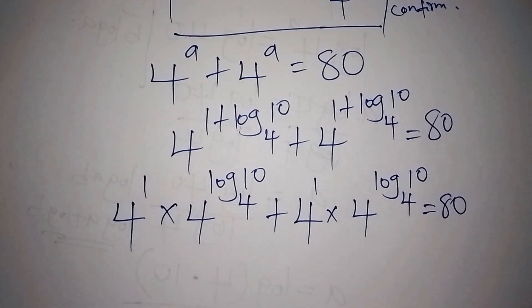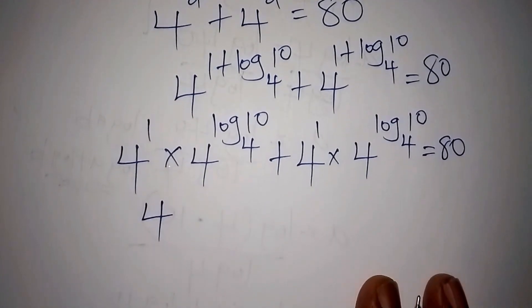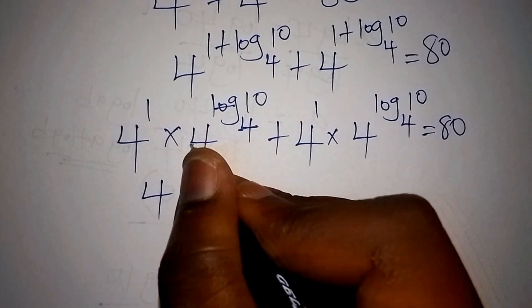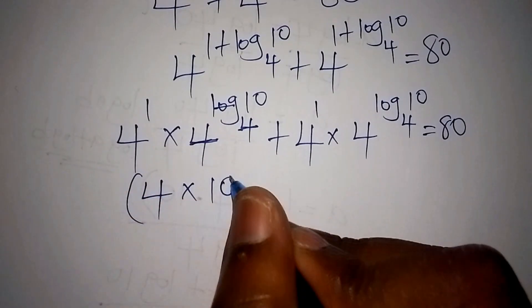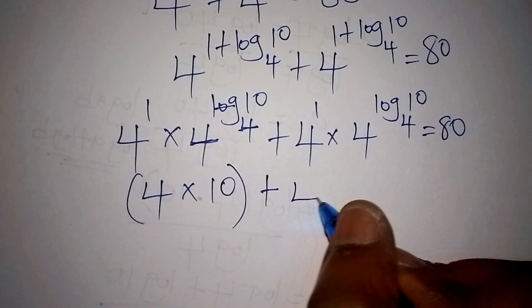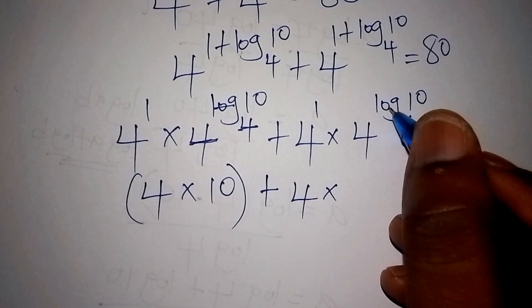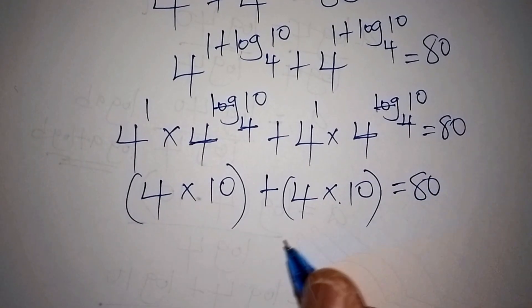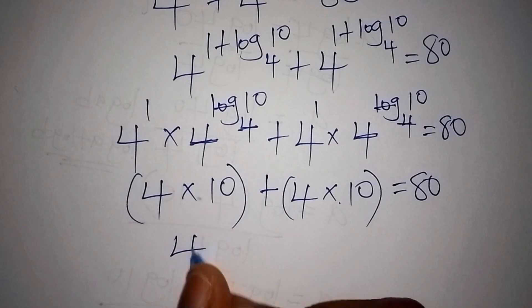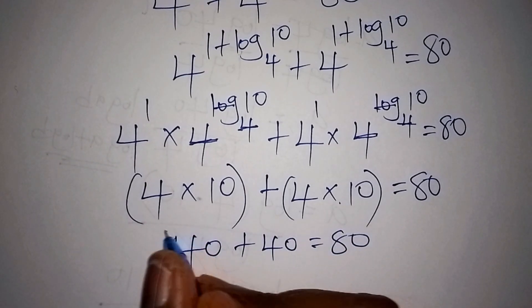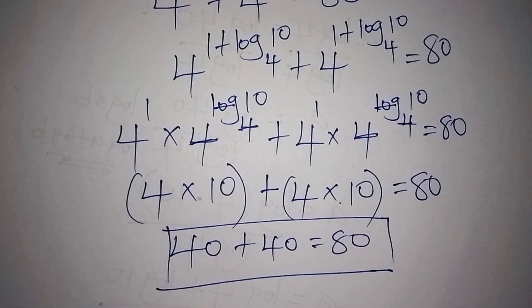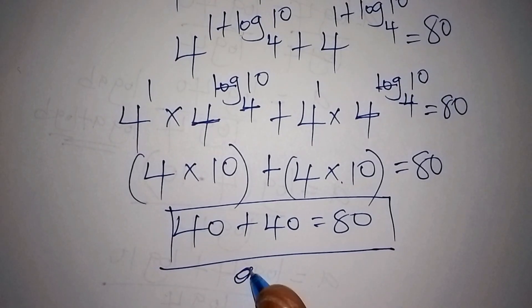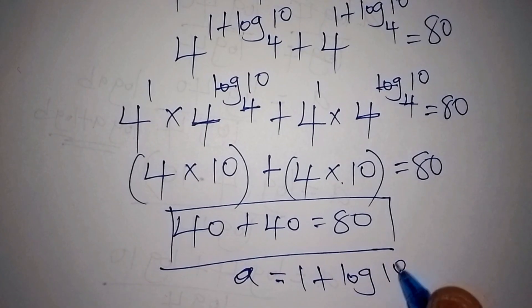Now, 4 to the power of 1 is 4. Then log base 4 of 10 applied to base 4 cancels, leaving 10 alone. So we have 4 times 10 in bracket, plus 4 times 10 in bracket, equals 80. So 40 plus 40 equals 80. This confirms that our answer is correct, and indeed the correct value for a is equals to 1 plus log of 10 to the base of 4.